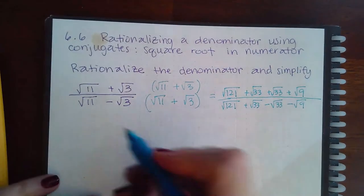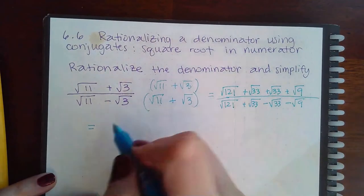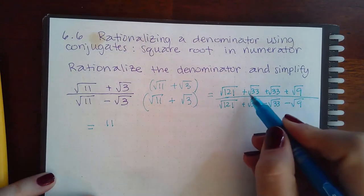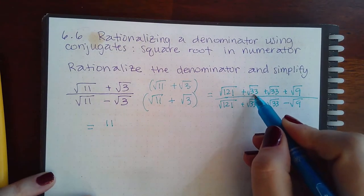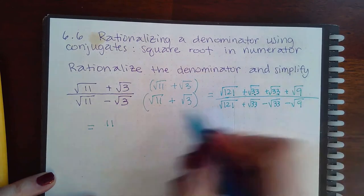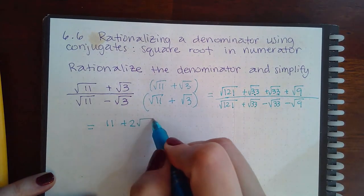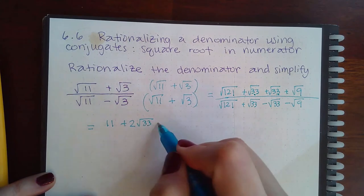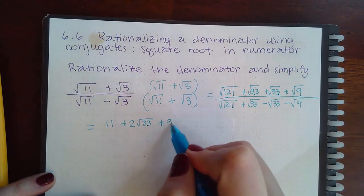And then I'm going to simplify this. So the √121 is 11. √33 does not simplify, but I have one here and another one there, so I actually have a positive two √33s. And then the √9 is just 3.